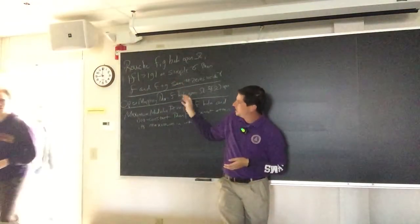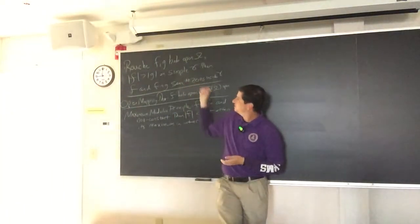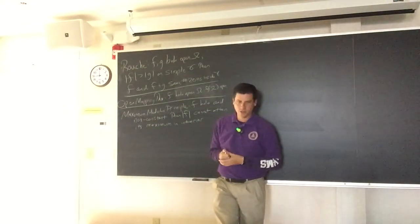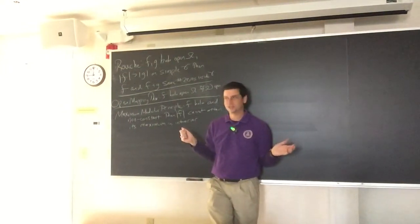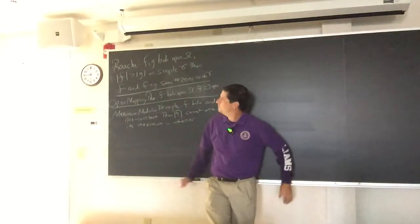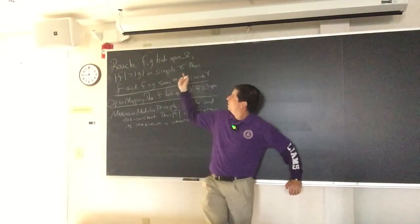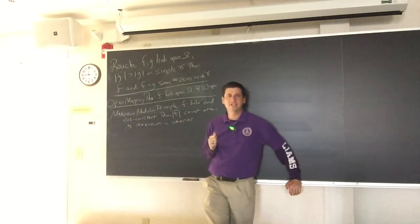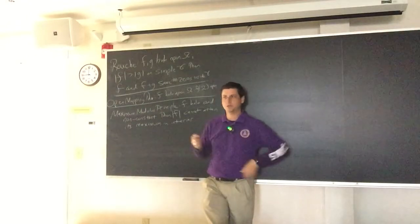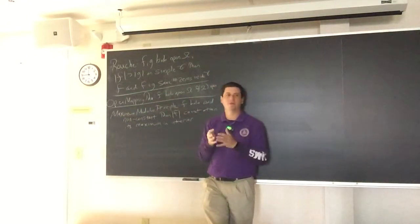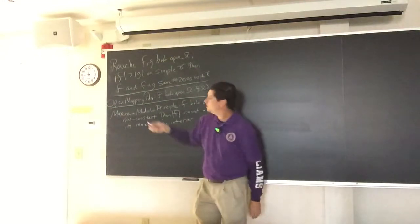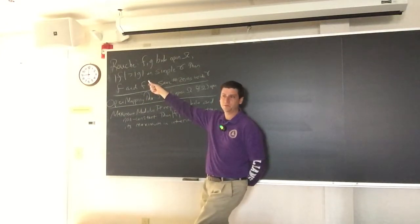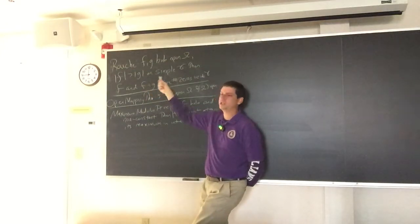I'm going to quickly restate the three big results. We have Rouché's Theorem, which says if F and G are holomorphic on an open set Omega — and I don't think we ever use Omega in this class for something other than an open set — then if the absolute value of F is strictly greater than the absolute value of G on a simple closed curve Gamma, then F and F plus G have the same number of zeros inside Gamma. Different books will write this different ways.